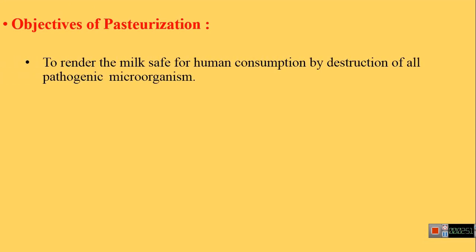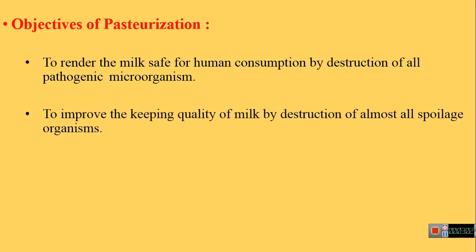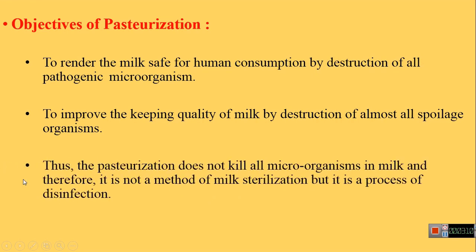Now we will see what are the objectives of pasteurization. The first objective is to render the milk safe for human consumption by the destruction of all pathogenic microorganisms present in the milk. The second objective is to improve the keeping quality of milk by the destruction of almost all spoilage-causing organisms. Thus, pasteurization does not kill all organisms in the milk, and therefore it is not a method of milk sterilization but a process of disinfection.